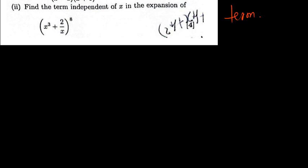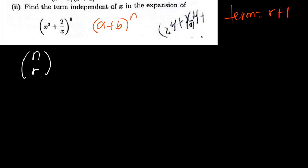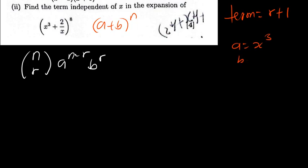The term is given by r plus 1. Whenever we have (a + b) raised to the power n, the binomial expansion formula goes like this: n choose r, then a raised to the power (n minus r) times b to the power r. So here, a is x to the power 3, b is 2 over x, and n is 8. I don't know what r is — when I find r, I'll be able to find the term independent of x.